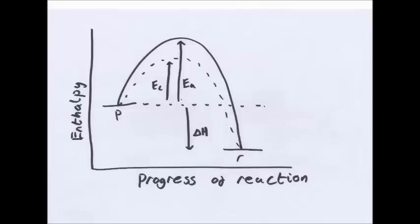Now this is the entropy profile diagram. If you use a catalyst, EA is the original activation energy, EC is the activation energy of a catalyst. So it lowers the activation energy, so less energy is needed. But as you see, delta H does not change.